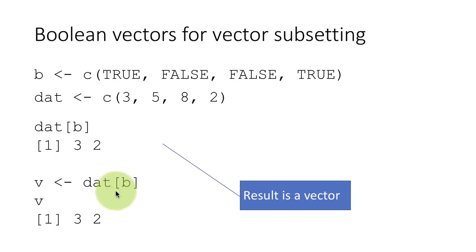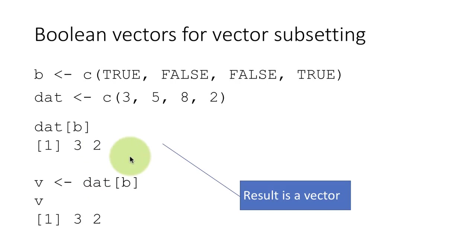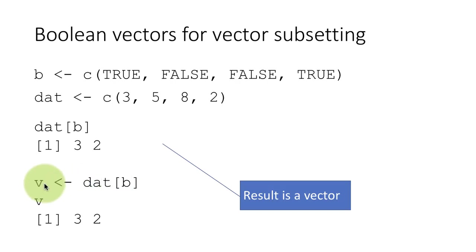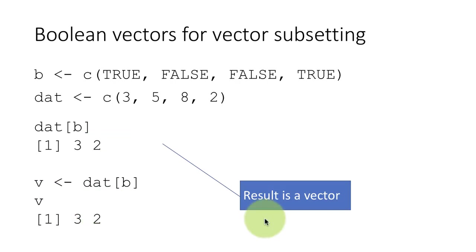Of course, I can also assign the result to a variable. Instead of just saying dat[B] and seeing the result printed on the console, I can say v is assigned the value dat[B]. In this case, since I assigned something, I do not see any result on the console. Then to see the value of v, I type the command v, and I see the result 3, 2 on the console — exactly the same result.